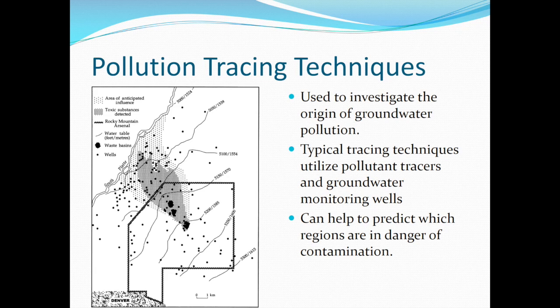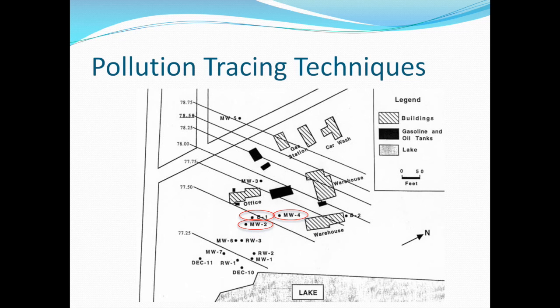Pollution tracing can help pinpoint the origin of groundwater contamination by using pollutant tracers and monitoring wells. It can also help to predict where the pollution might travel to next. The wells circled in red have been identified as contaminated with hydrocarbons from fuel. What are the possible sources of the pollution? We notice gas stations, a car wash, and multiple gasoline and oil tanks — but how do we narrow all these possibilities down to the few potential sources?